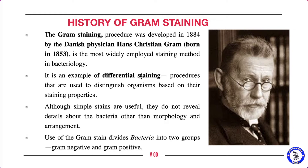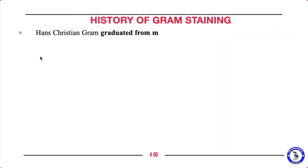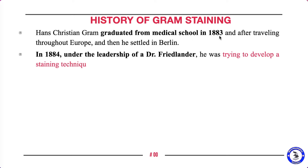The gram staining procedure differentiates bacteria into two groups: gram negative and gram positive. In a previous video, we saw the simple staining technique, where only a single basic dye such as methylene blue, safranine, or crystal violet is used. With simple staining we can see only the cell shape, size, and arrangement of bacteria, but here we distinguish bacteria into two groups.